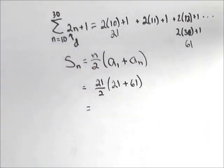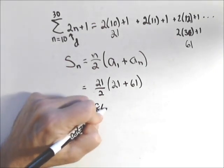So now we can use our formula to figure this out really quick without having to do out all the terms. And we get a total of 861.